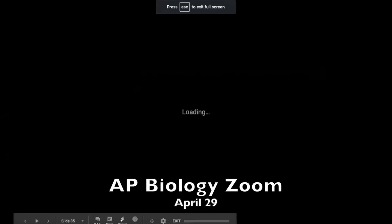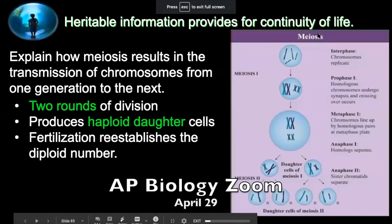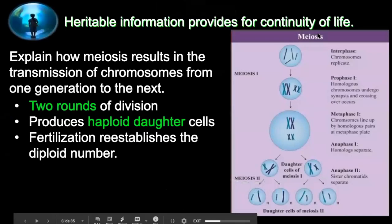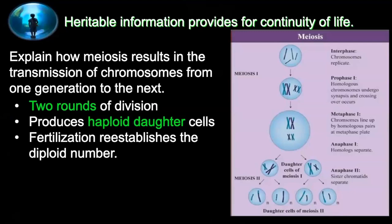Unit five was about genetics and heredity, and with that you would pull in mitosis and meiosis. There are some key events that you should be familiar with in meiosis, and we'll try to make sure that we point those out.